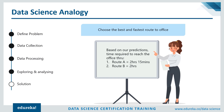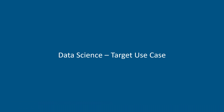So this analogy covered the different steps in data science: first define the problem — choosing the fastest route; then collect data by observing surroundings; then process the data through data cleaning and removing irrelevant information; then explore and analyze by identifying decision variables and predicting their values; finally arrive at a solution — choosing the best route to the office.